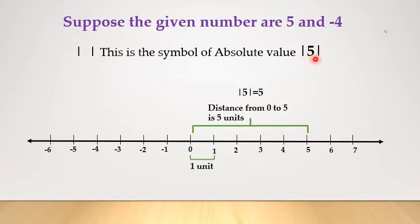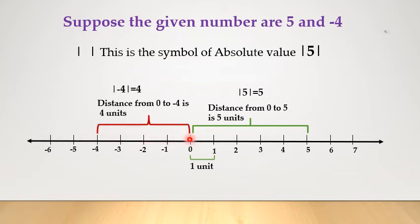Another given number is minus 4. What is the absolute value of minus 4? Let me show you on the number line. From 0 to the left side: minus 1, minus 2, minus 3, minus 4. So the distance from 0 to minus 4 is 4 units. Therefore, the absolute value of minus 4 is 4. This 4 is the distance from 0 to minus 4.